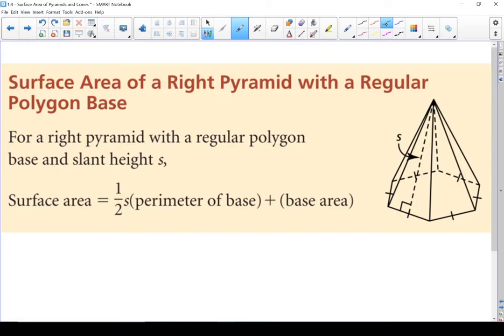The textbook lists this formula right here. Surface area of a right pyramid with a regular polygon base. I don't like this formula because it depends upon having a regular polygon base. What that means is all of the sides on the base are the same length. What I prefer to do is break it down into its shapes, draw a net, and find the surface area of each of those shapes. Because if you don't have a regular polygon base, this formula doesn't work.